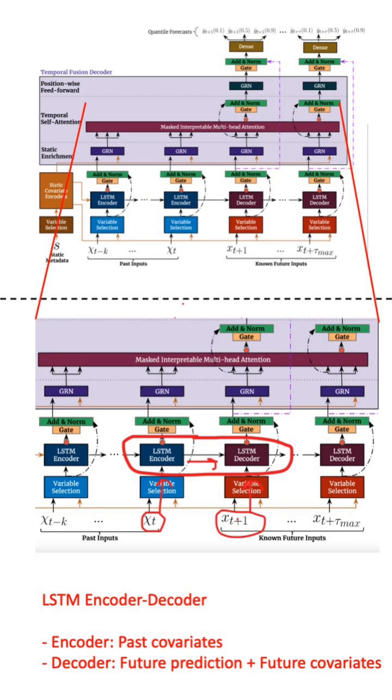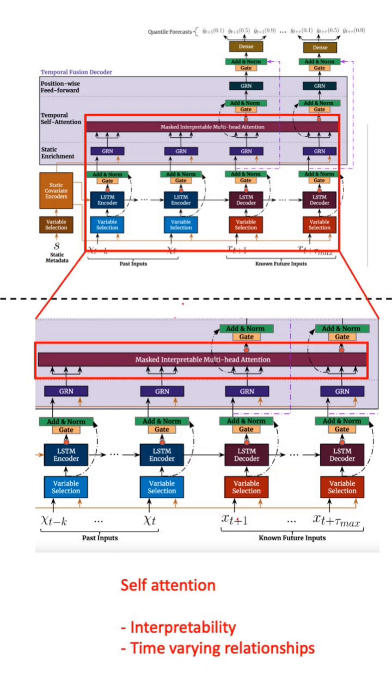Fourth is an encoder-decoder subnetwork where the encoder is trained with past covariates and the decoder predicts future steps while also using future covariates as input. The fifth component is a self-attention layer attending different events in time. Both fourth and fifth components help in learning time-varying relationships at different timescales.